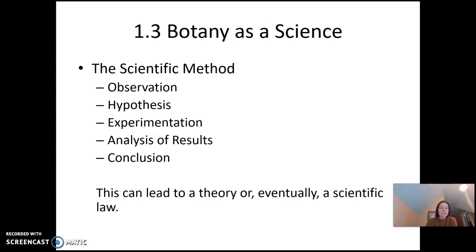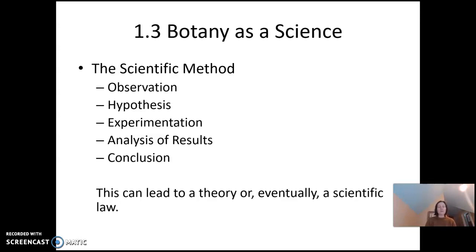In chapter 1 you'll see the description of botany as a science. Botany is the study of plants, and we do this through the scientific method. Plants, as well as anything in science, are studied through this process, and it starts with observation. A scientist will make an observation of things happening in nature or in a laboratory setting, develop a hypothesis — a guess or a tentative explanation for what's happening and the reason behind it.